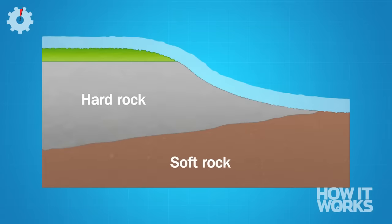First, a layer of resistant hard rock is undercut by the erosion of the softer rock beneath. This forms a step over which the water flows.